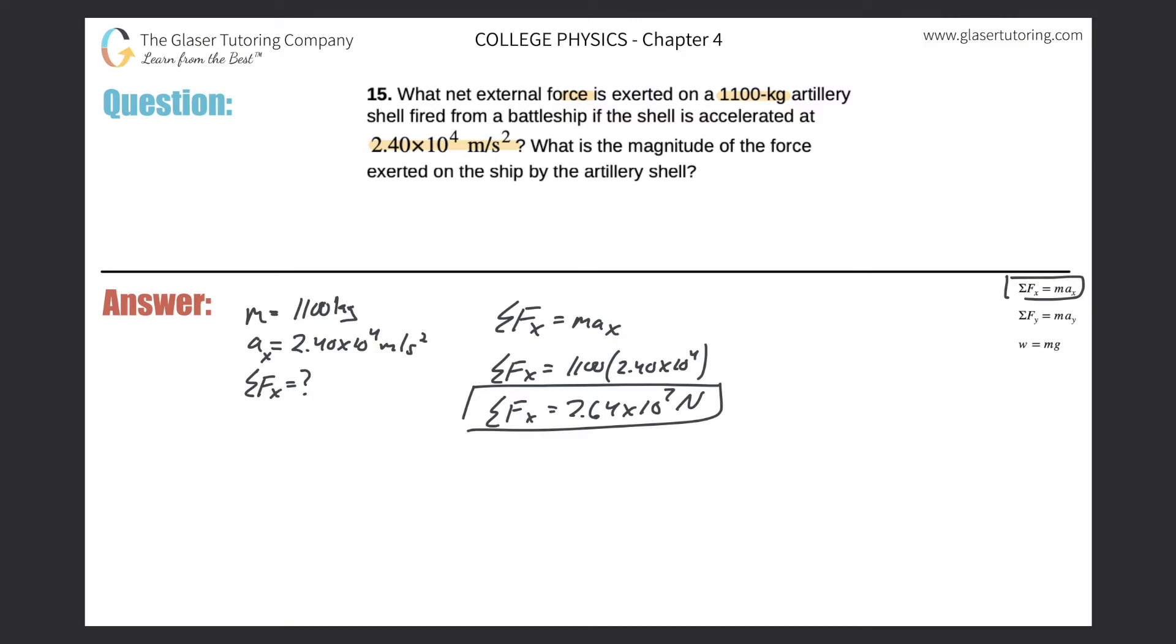Now it says what is the magnitude of the force exerted on the ship now by the artillery shell. So this is basically simply Newton's third law. Equal but opposite forces.